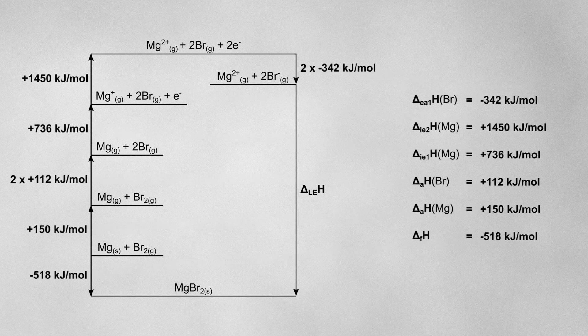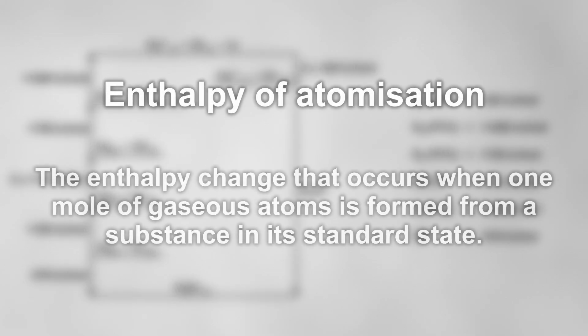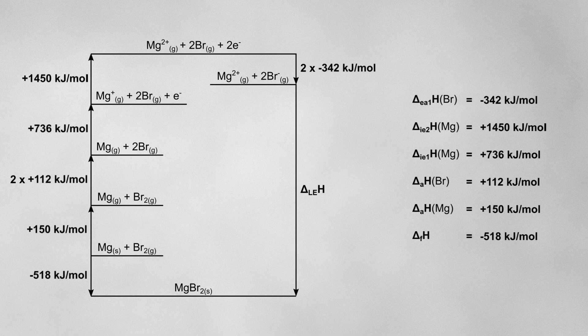Now, there are a couple of things I want to point out at this stage. You might notice that the enthalpy of atomization for bromine has been doubled here. This is because the definition of the enthalpy of atomization is the enthalpy change that occurs when one mole of gaseous atoms is formed from a substance in its standard state. However, here there are not one but two moles of gaseous bromine atoms forming, so we'll need to double the given value of the enthalpy of atomization for bromine.